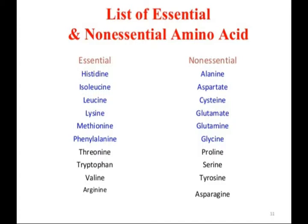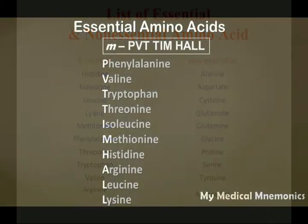So if there are 20 amino acids, ten are essential and ten are non-essential. If we remember the ten essential amino acids, definitely the remaining ten are non-essential. There is a simple mnemonic which is going to help you remember essential amino acids, and indirectly you are also remembering the non-essential amino acids. The mnemonic is: PVT TIM HALL.